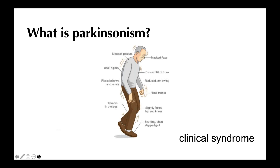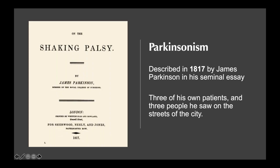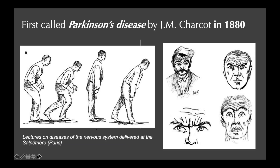Parkinsonism is a clinical syndrome recognizable quite quickly just by observation — the flexed posture, tremor, and rigidity. This was first described by James Parkinson in 1817 in his seminal essay, based on observations of just six patients — three of his own and three he saw in the streets. Almost 70 years later, Charcot in France first referred to the syndrome as Parkinson's disease. These are his original drawings describing the typical posture and face in patients with Parkinsonism.